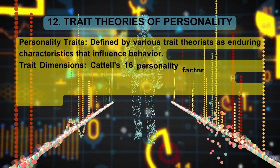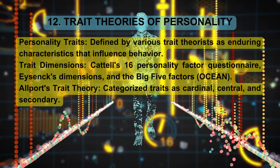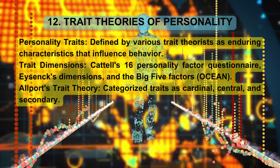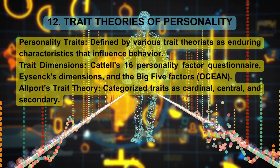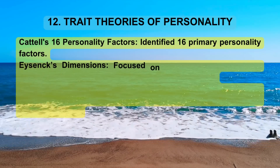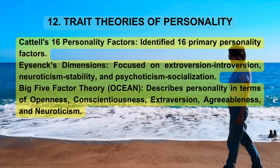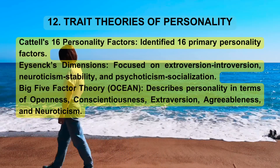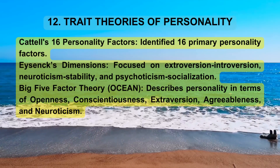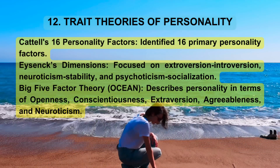Trait theories of personality. Personality traits are defined by various trait theorists as enduring characteristics that influence behavior. Allport's trait theory categorized traits as cardinal, central, and secondary. Cattell's 16 Personality Factor Questionnaire identified 16 primary personality factors. Eysenck's dimensions focused on extroversion-introversion, neuroticism-stability, and psychoticism-socialization. The Big Five Factor Theory (OCEAN) describes personality in terms of Openness, Conscientiousness, Extroversion, Agreeableness, and Neuroticism.